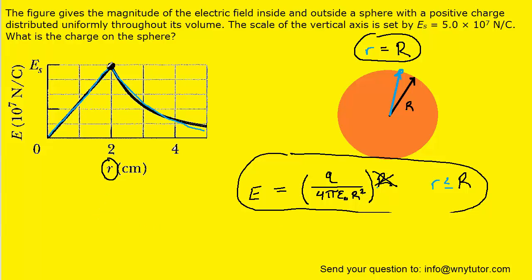We can see from the graph that the radius of the sphere is 2 centimeters, or 2 times 10 to the minus 2 meters. So we're going to plug that in for the radius R. And then the electric field at this point is simply the value of Es, which was stated in the question to be 5 times 10 to the 7th.